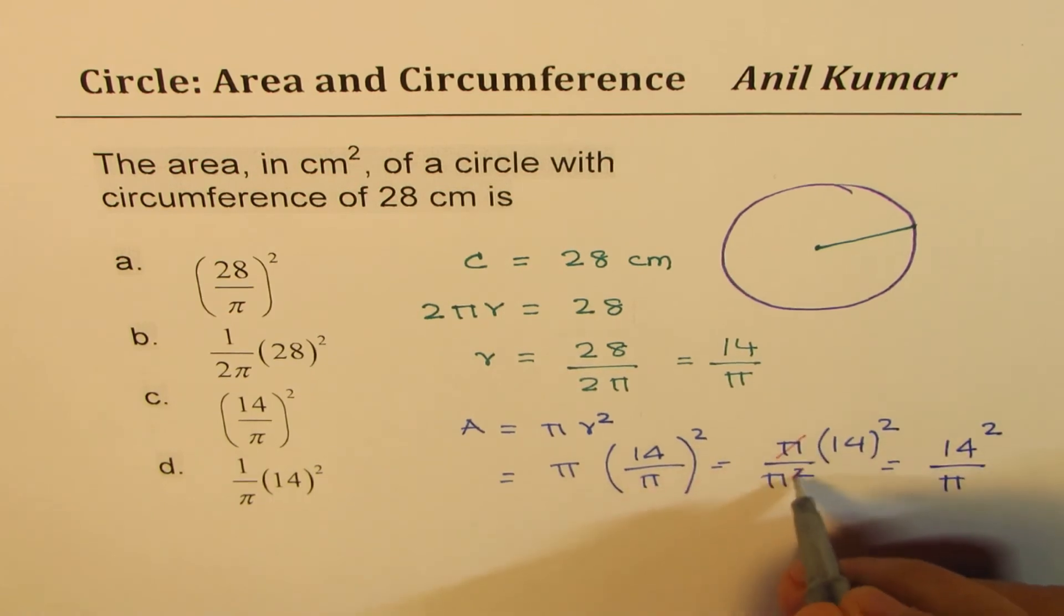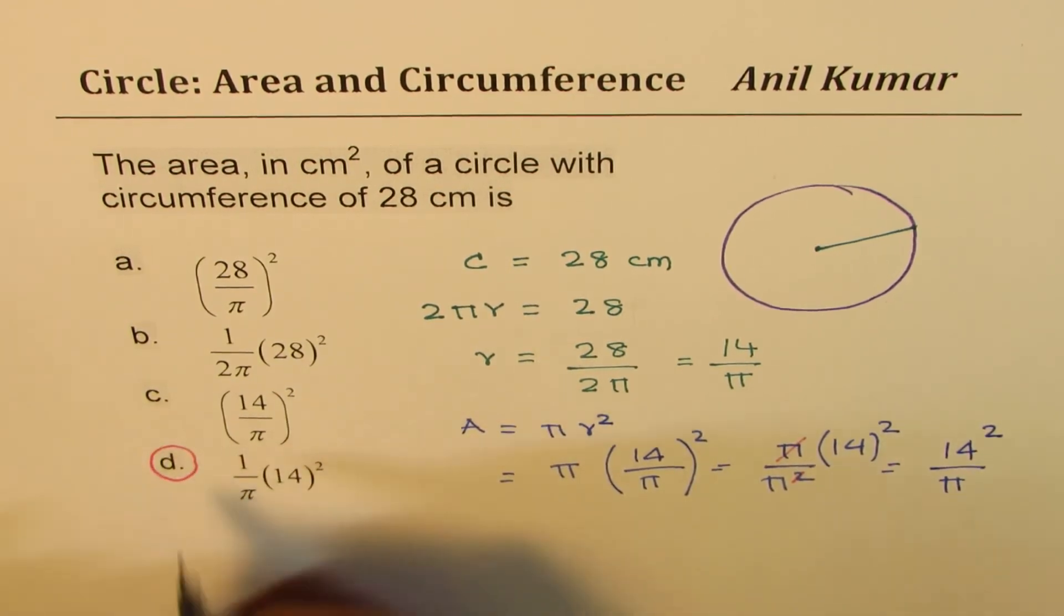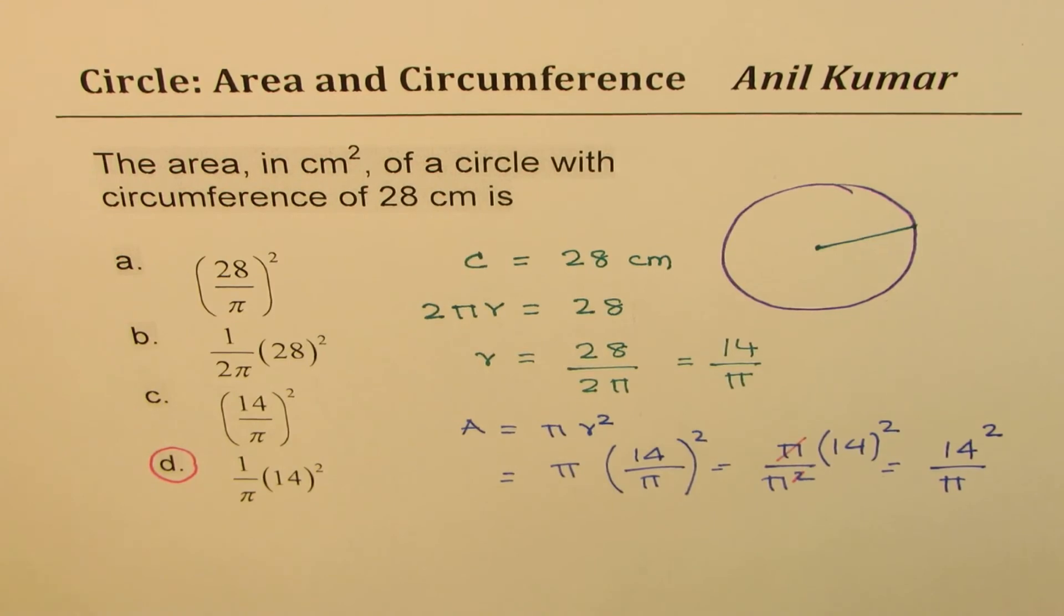You get the point, right? So the correct option for us is 14² by π, which is option d. So that is how we could find the answer for the given question and I hope that helps.